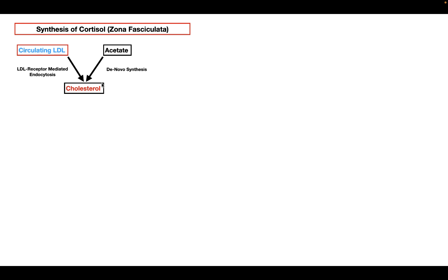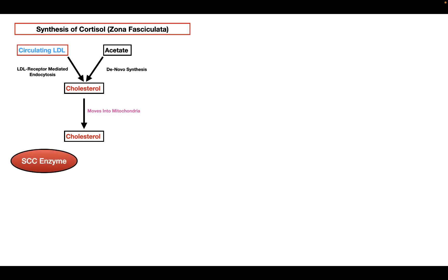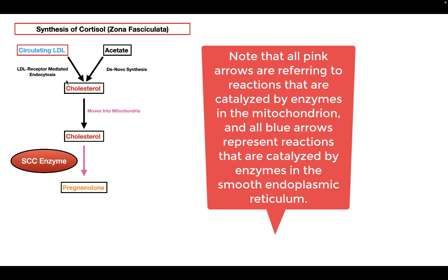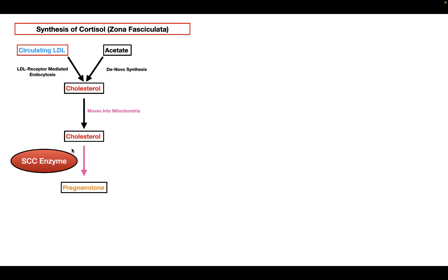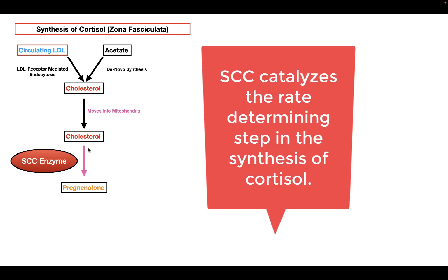Once we have cholesterol, the first thing it's going to do is move into the mitochondria, where it undergoes its very first reaction. This reaction is catalyzed by the enzyme SCC enzyme, or side chain cleavage enzyme, which catalyzes the conversion of cholesterol into pregnenolone. This reaction is very important because it is the rate-determining step in the synthesis.